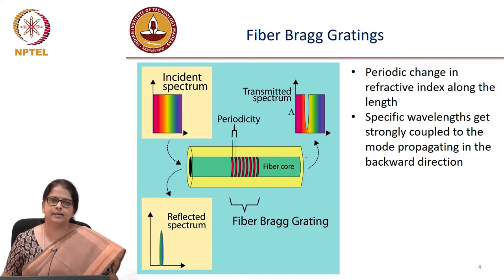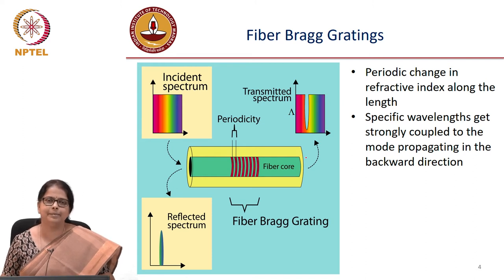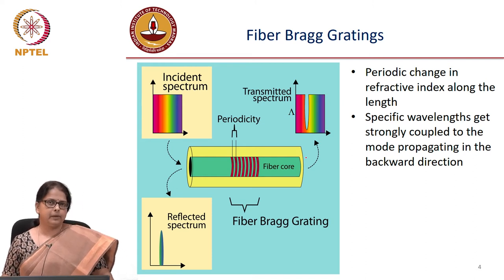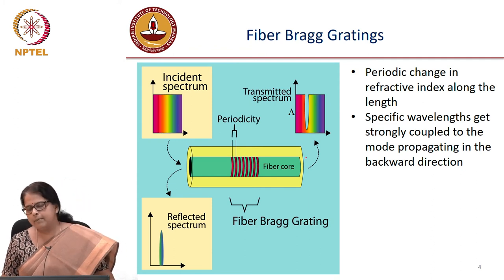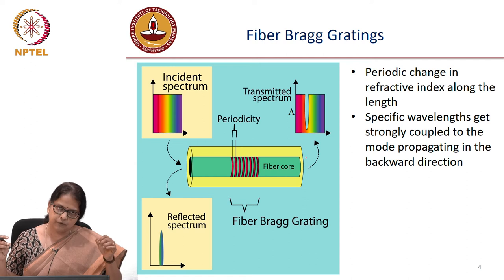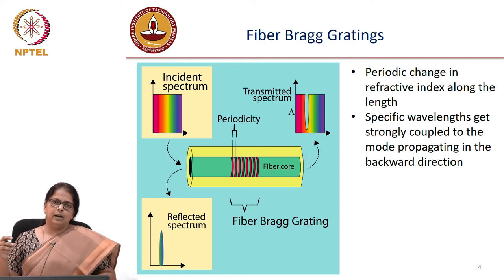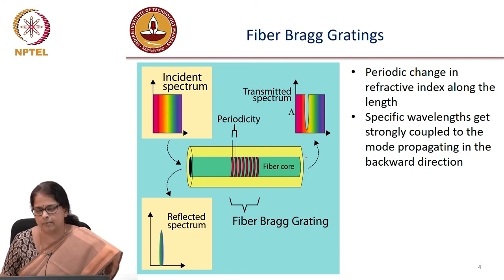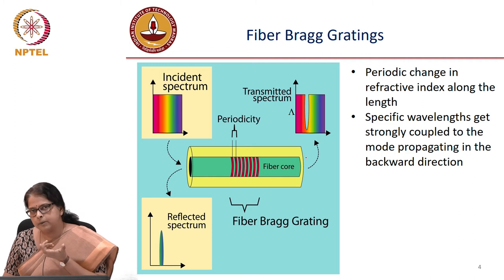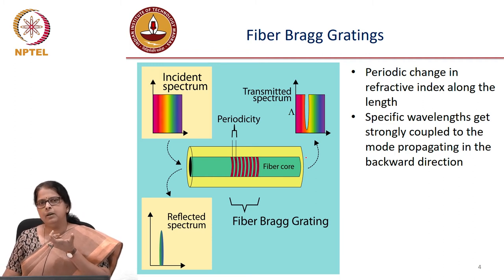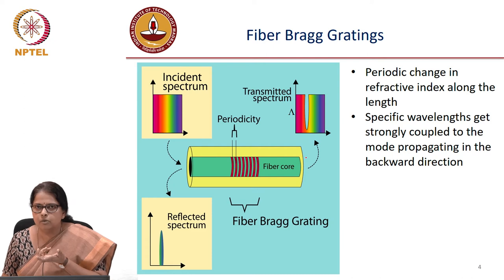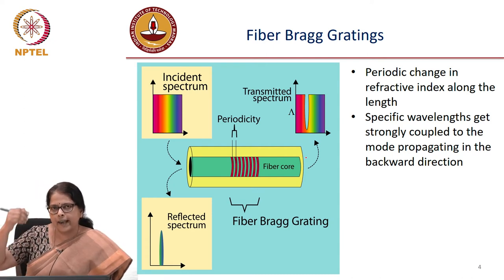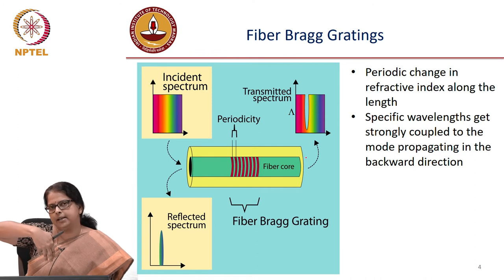The other wavelength selective device most commonly used in fiber optic communication systems is a fiber Bragg grating. A fiber Bragg grating is nothing but a piece of silica fiber with a slight difference in composition — it is doped with germanium or some other dopant that is sensitive to UV light, allowing artificial gratings to be written on the fiber.